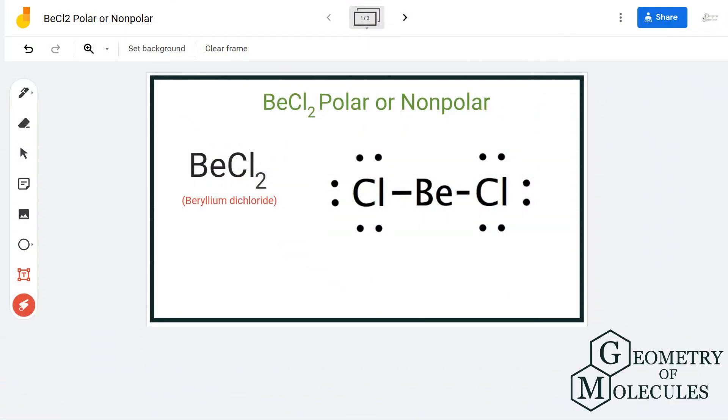In this video, we are going to determine the polarity for the BeCl2 molecule, the chemical formula for beryllium dichloride. To determine the polarity of this molecule, we will first go through its Lewis structure.